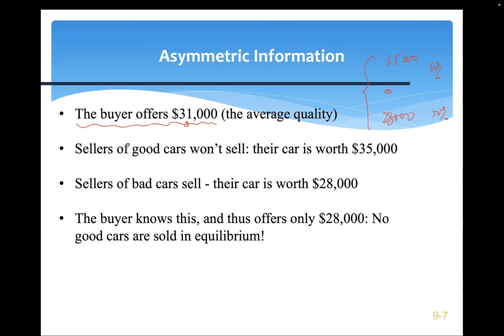Looking at the seller side: the good car owner is not going to sell, because their car is worth $35,000 but the offer is only $31,000. The bad car owner is eager to sell — their car is only worth $28,000, but the deal is $31,000, giving them a $3,000 profit.